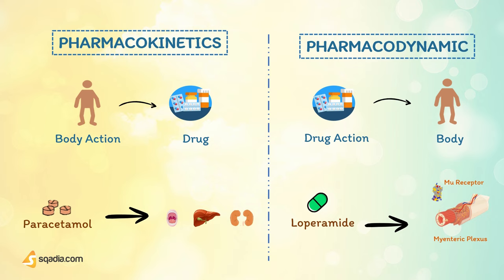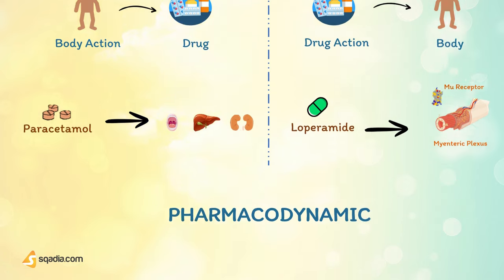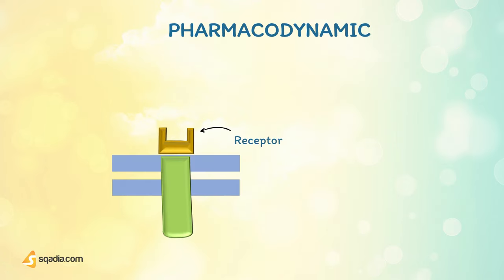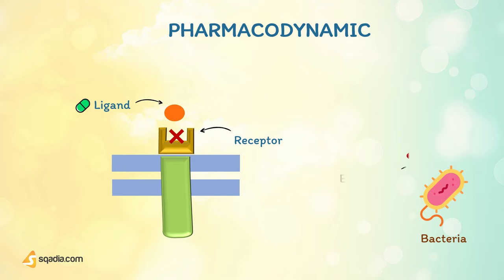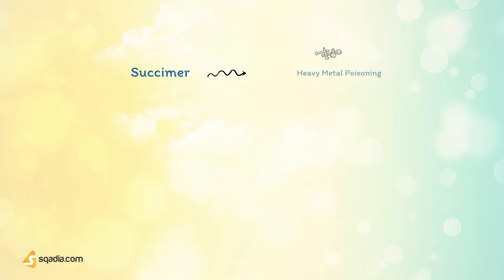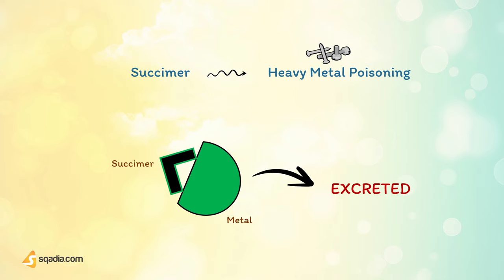Most drugs produce their effects by targeting specific cellular macromolecules, often proteins. The majority act on receptors in cell membranes, but they can also inhibit enzymes and transporter molecules. For example, beta-lactam antibiotics are bactericidal, acting by interfering with bacterial cell wall synthesis. Certain drugs do not have conventional targets — for example, succimer is a chelating drug used to treat heavy metal poisoning. It binds to metals, rendering them inactive and more readily excretable. Such drugs work by means of their physico-chemical properties and are said to have a non-specific mechanism of action.